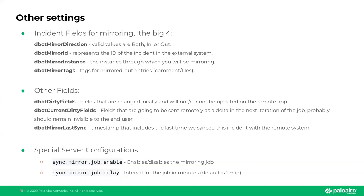There are other settings worth mentioning. For mirroring to work, XSOAR uses a minimum of four system fields to keep track of the third-party app and all updates — these are called the 'big four': dbotMirrorDirection, dbotMirrorId, dbotMirrorInstance, and dbotMirrorTags. These are system fields that are mostly transparent to the user, but in certain scenarios we need to set them in order to enable mirroring, as we'll cover in the demo section.